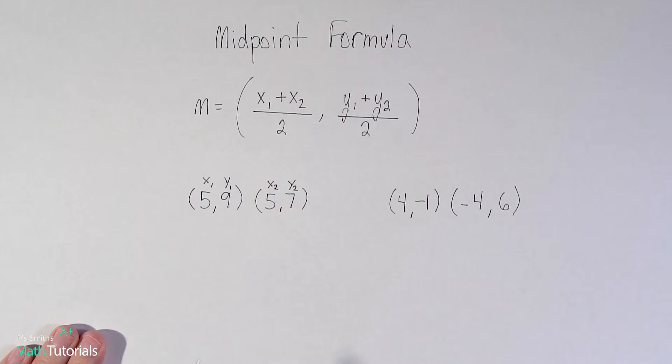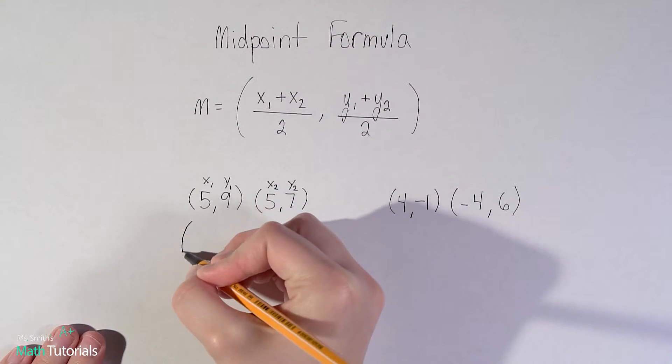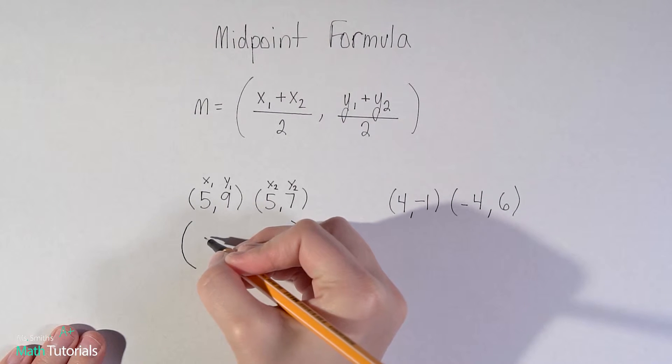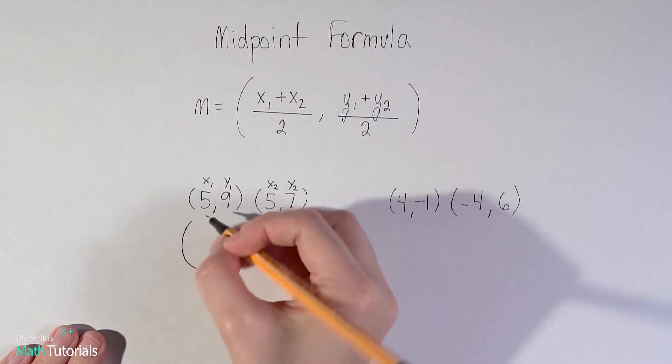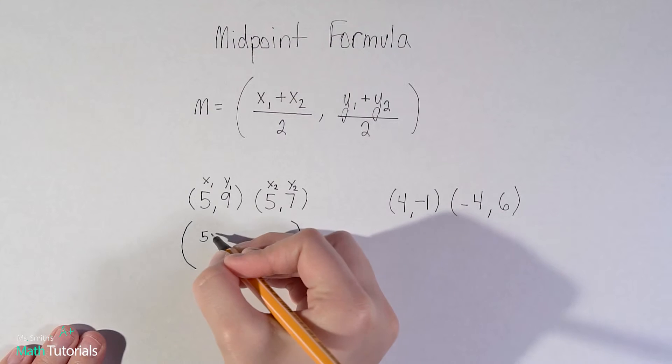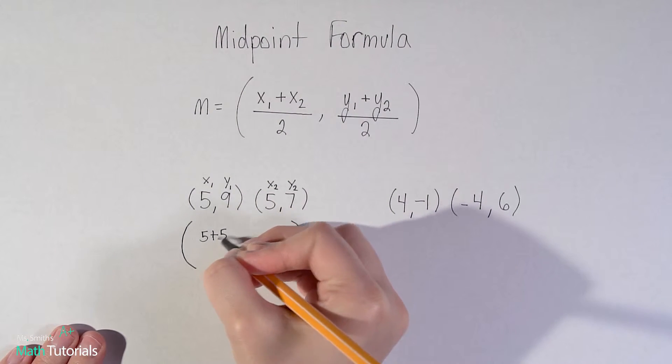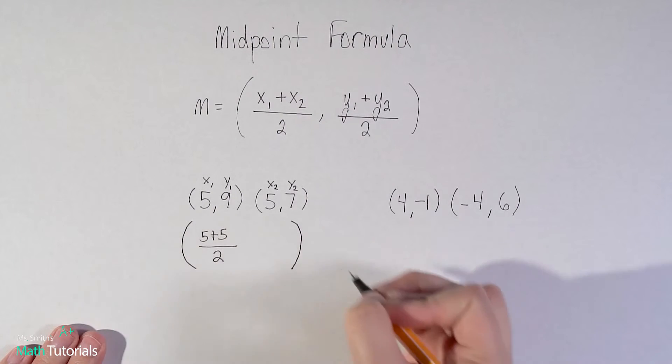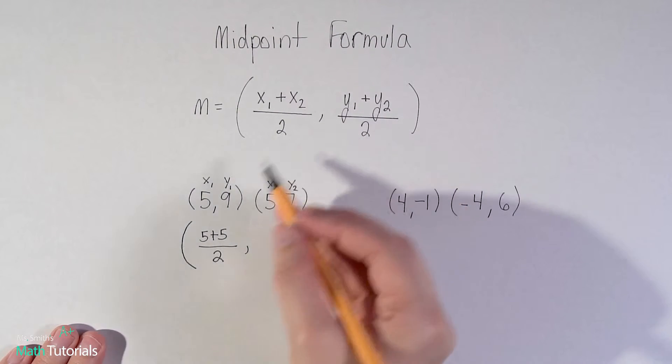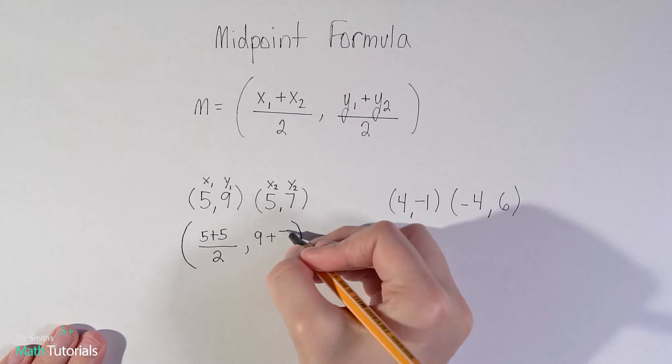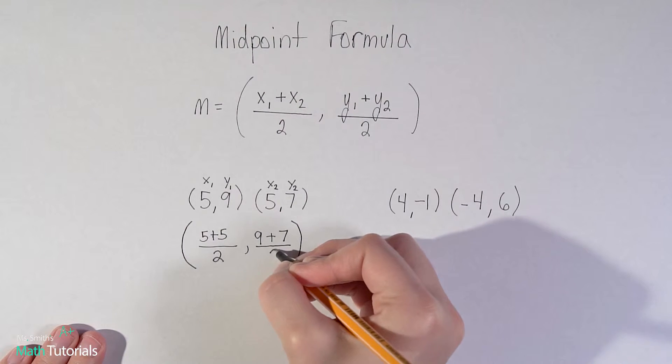Now I'm just going to fill into the formula. I've got my big parentheses, and then I've got my x1 which is 5 plus x2 which is 5 divided by 2. And then I've got my y1 which is 9 plus y2 which is 7 and then that divided by 2.